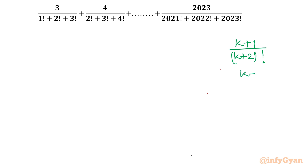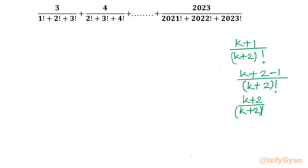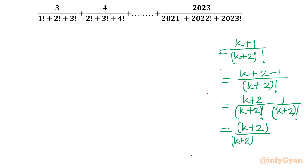This (k+1) I will write as (k+2) − 1, divided by (k+2)!. Now I will split: (k+2) over (k+2)! minus 1 over (k+2)!. So what is left overall? The first part gives 1 over (k+1)!.